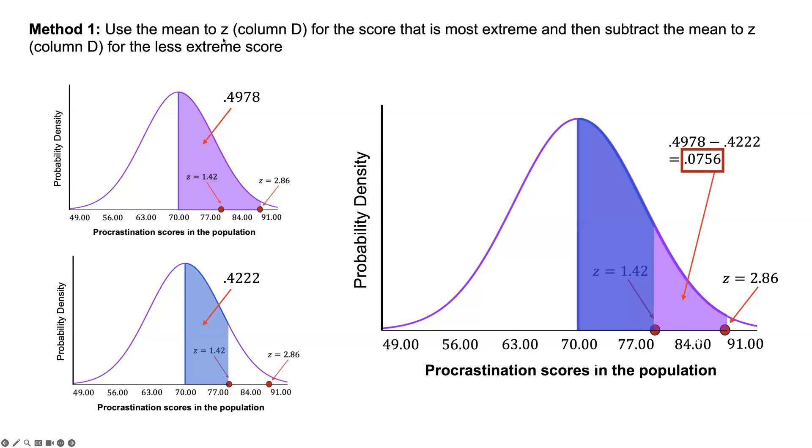The first way is that you use the mean to z column. In this first graph, I'm looking for the score that is most extreme, mean to z, which was 90. That's a z-score of 2.86. Then I'm subtracting the mean to z for the less extreme score. Our original mean to z for 90 was 0.4978. The mean to z for the less extreme z-score, 1.42, is 0.4222.